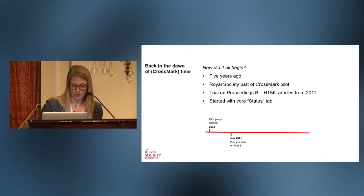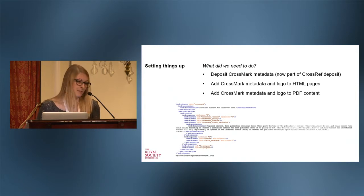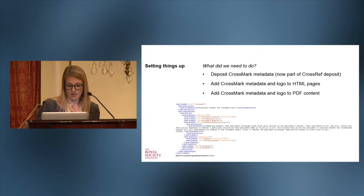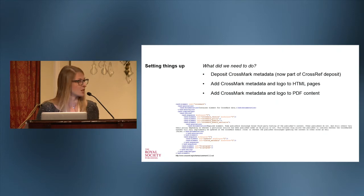So what did we do? We had to do three core things — it's pretty much the same now as it was then. The first was to make sure that we were able to deposit Crossmark metadata. At the time, as part of the pilot, it was a separate process to deposit that metadata. Now it's part of the Crossref deposits that we make every time we publish an article — it's in the same core set of data.